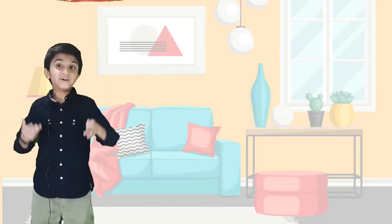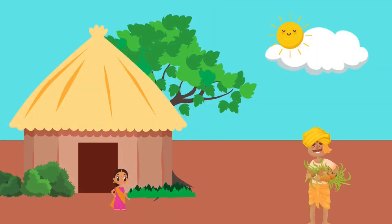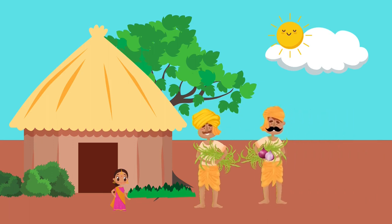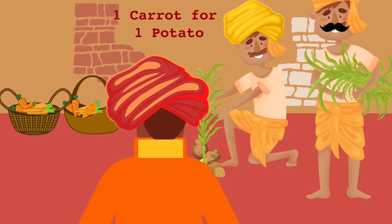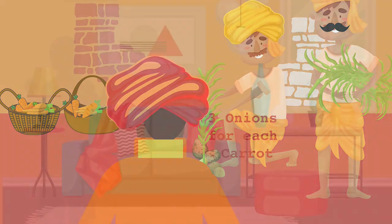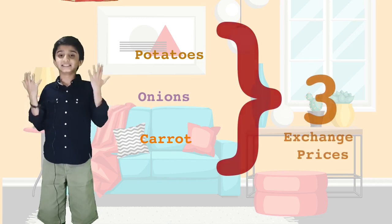Now Ramu and Deepu were having potatoes with onions every day and again started getting bored of the food, so they decided to meet Vinu who used to grow carrots. Ramu and Vinu arrived at a price of one carrot for one potato. Vinu said he should also get three onions for each carrot, just like the potatoes. So now there were three items — potatoes, onions, and carrots.